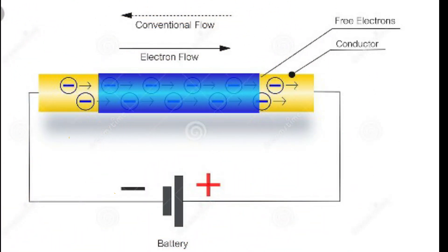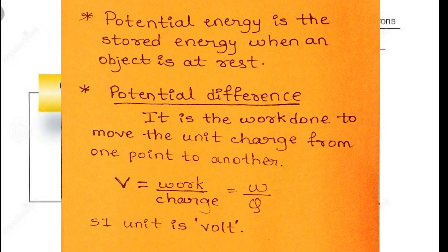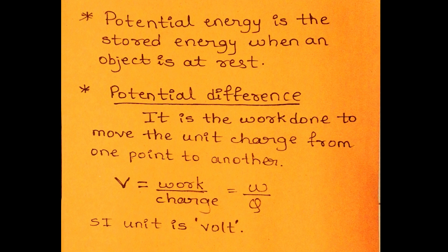But do you know what makes the charge flow, or how does the electric current flow? Let us take a metallic conductor. In this conductor, there are electrons which are free to move. Do you think electricity will flow through it? Clearly not, because there is nothing that triggers it. So, what is the factor that triggers the flow of electricity? It is nothing but the potential difference. We know the word potential — it is nothing but the potential energy, that is, the stored energy when an object is at rest. Similarly, there is a concept of electric potential energy.